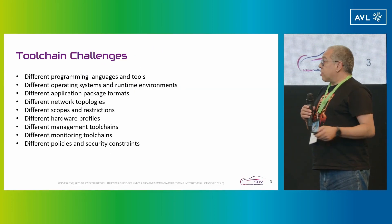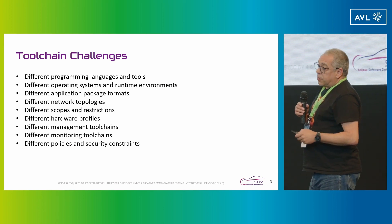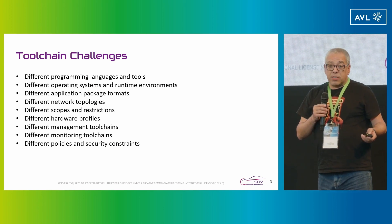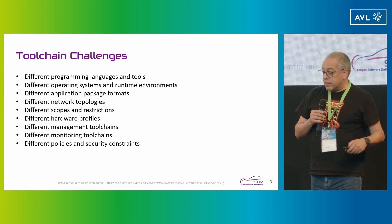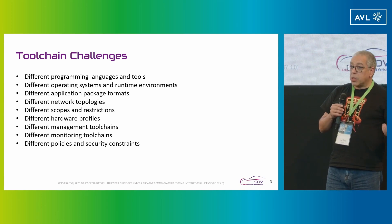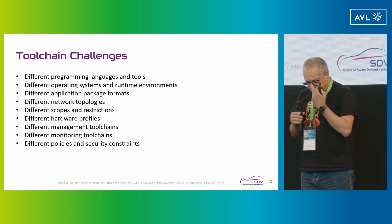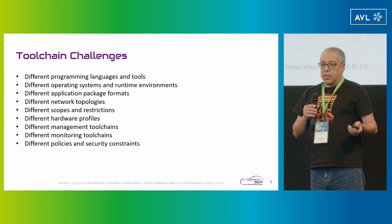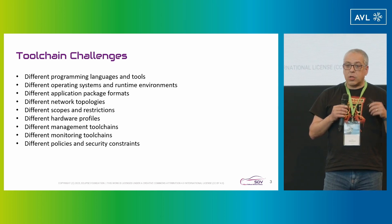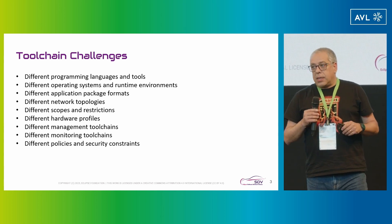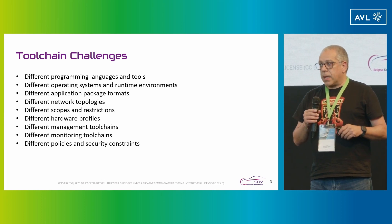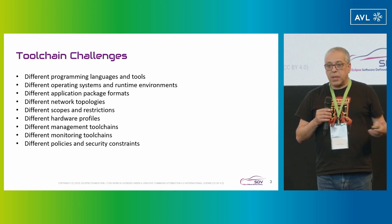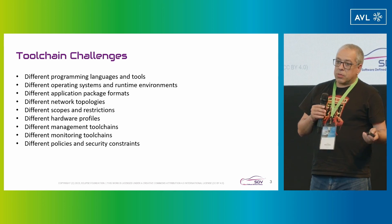We have seen from multiple sessions from IC, also from our workshop in the morning, that we have different programming languages and we will keep to have those different programming languages. We have different and multiple operating systems, application package formats, network topologies. So the complexity is out there and that complexity is not going to disappear. The other thing that is important to consider is that we don't know what's in front of us. New tool chains will pop up. New technologies will come down to the ecosystem.